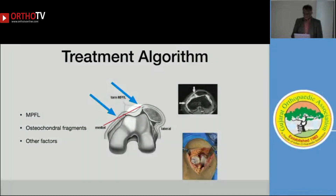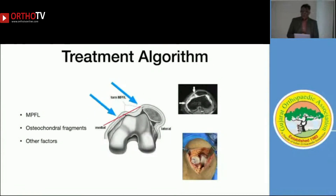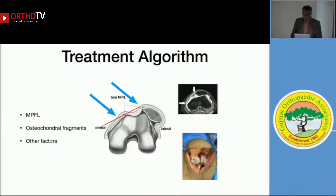In many cases, the MPFL can be torn in the middle part. If your MPFL is torn mid-substance and you try to do a plication at the patellar end, it will not work. In such cases we do a reconstruction even in a traumatic setting. Regarding the osteochondral fragment: if it is large with good bone stock, we can fix it back with absorbable sutures — saving cartilage. If the fragment is small and medial, we simply remove it.